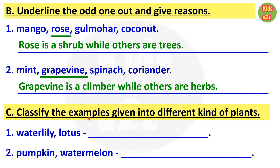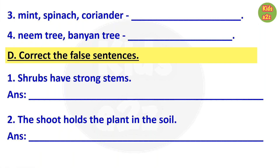Question C: classify the examples given into different kinds of plants. Here, examples are given and kids need to identify what kind of plants they are. Water lily and lotus are water plants. Pumpkin and watermelon are creepers. Mint, spinach, and coriander are herbs. Neem tree and banyan tree are trees.